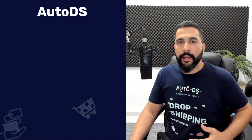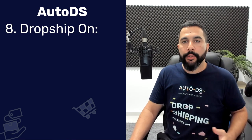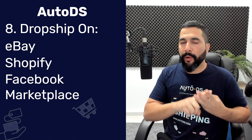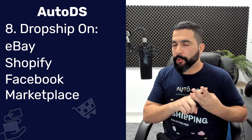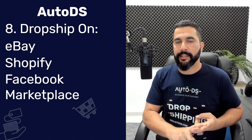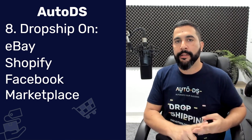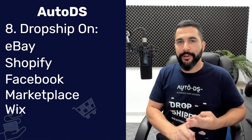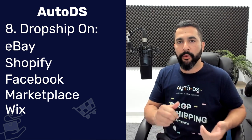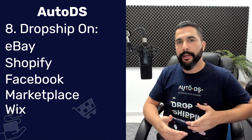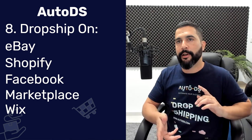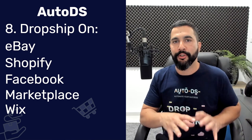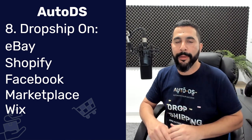On AutoDS, you can dropship on eBay, Shopify, Facebook Marketplace — which is great if you live in the US — and Wix. Soon they're also adding WooCommerce, BigCommerce, Amazon, and much more. Those who have known AutoDS for a while know that up until about a year and a half ago, it was just eBay.